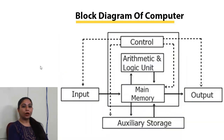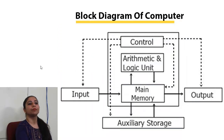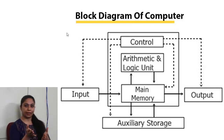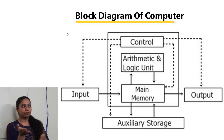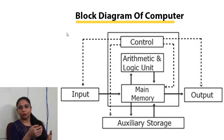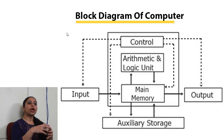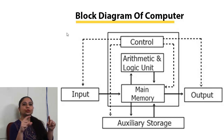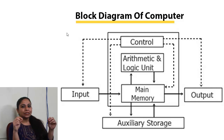Now we have the block diagram of a computer system. Before discussing this diagram, let me explain what a block diagram is and how it differs from a regular diagram. A block diagram is something very similar to a flow chart — it tells you about the flow of all the components or units.